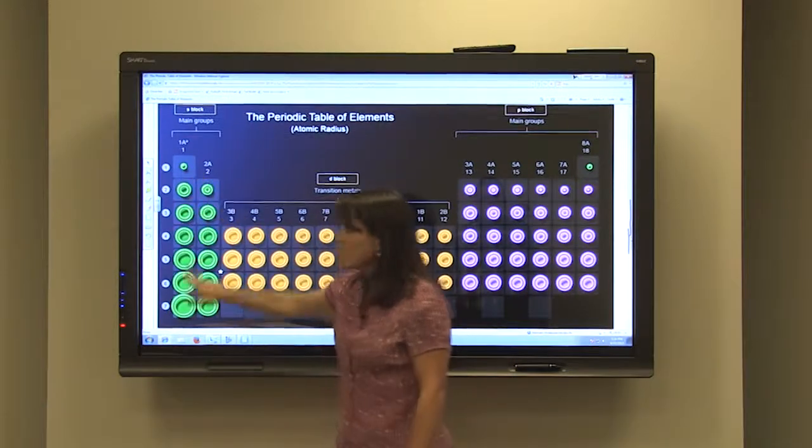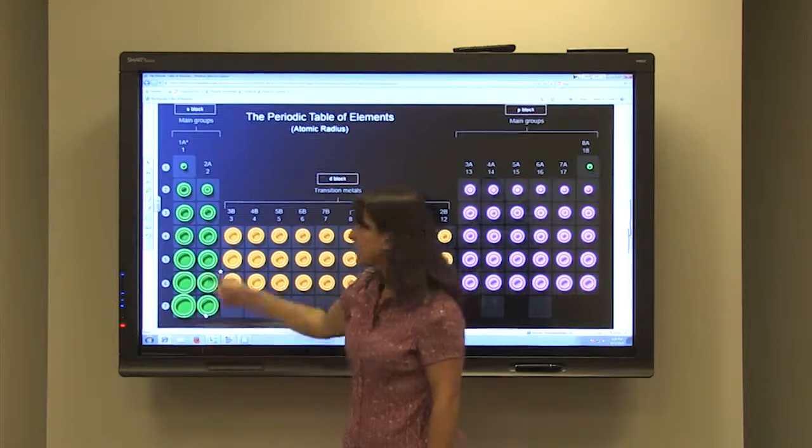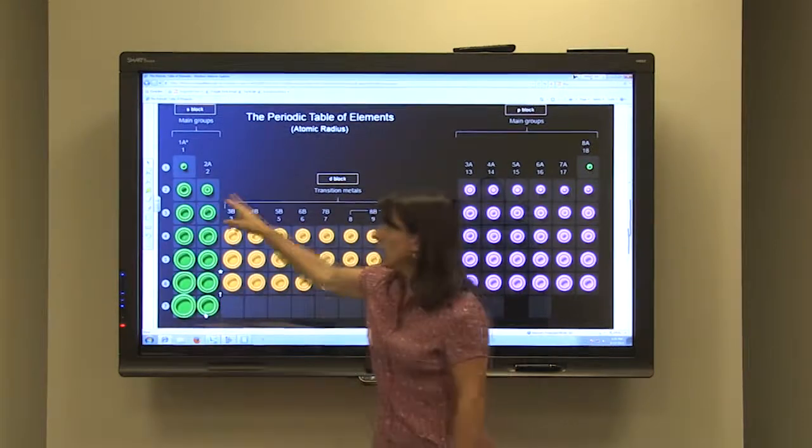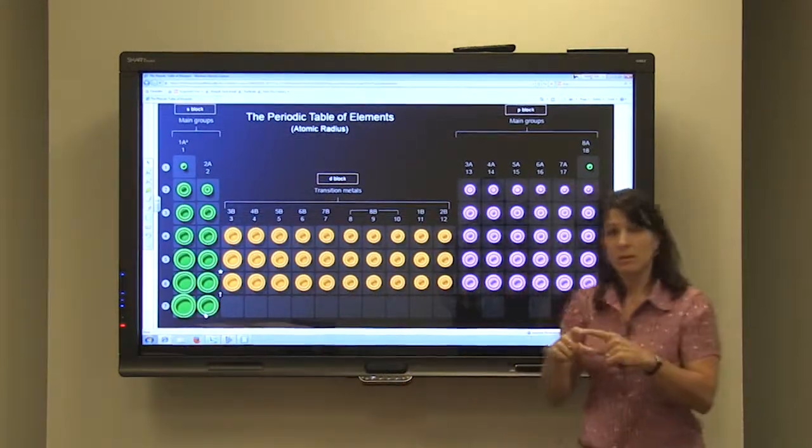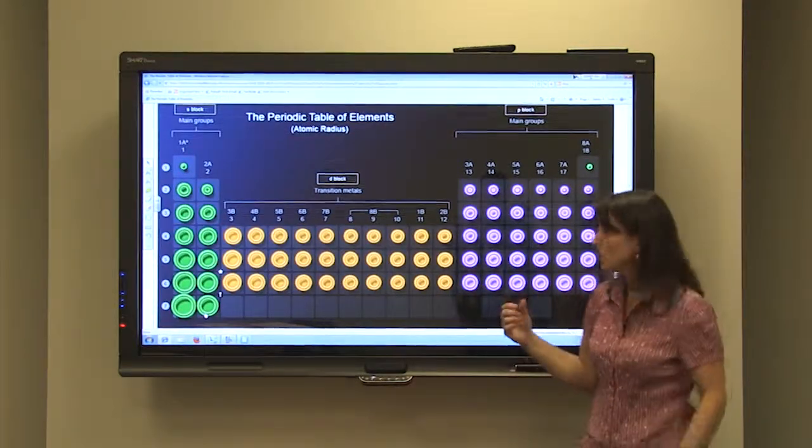As we go down a group or a vertical column, the size gets larger. We start with level one. We only have one level of electrons. On level two, we have two, three, four, five. They get larger and larger.